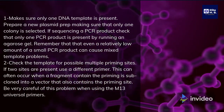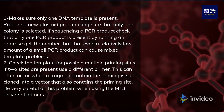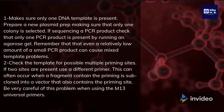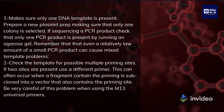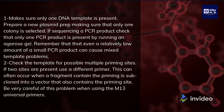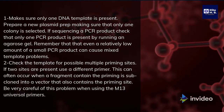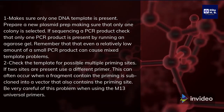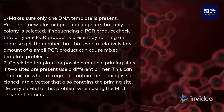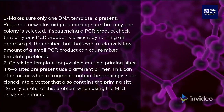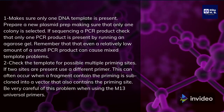Check the template for possible multiple priming sites. If two sites are present, use a different primer. This can often occur when a fragment containing the priming site is subcloned into a vector that also contains the priming site. Be very careful of this problem when using the M13 universal primers.